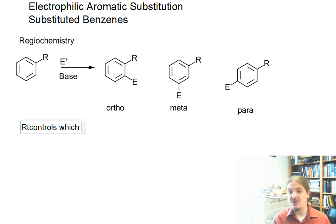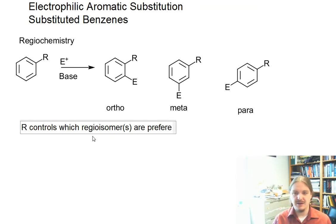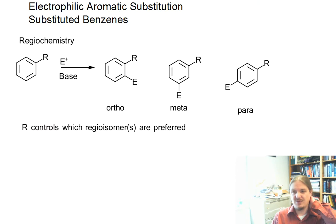The identity of R, the functional group already on the ring, controls which regioisomers are preferred. And it's worth putting regioisomers because some reactions might prefer more than one.